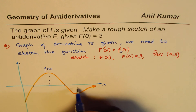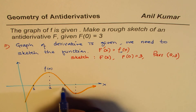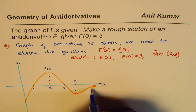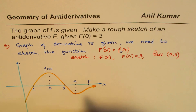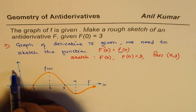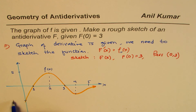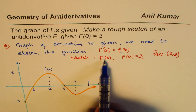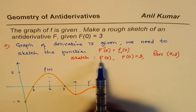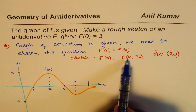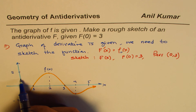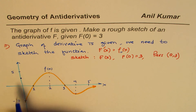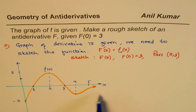Let's put some values here. This is 1, 2, 3, 4, 5 on the x-axis, and the y-value goes to about 5 and minus 5. We are saying this is the graph of f(x), which is actually the derivative, and we need to sketch F(x). We know the anti-derivative passes through the point (0, 3), so that is the starting point for our graph.